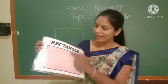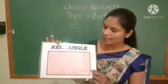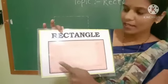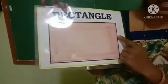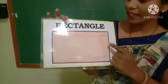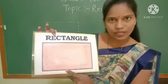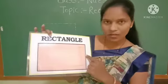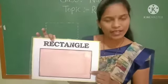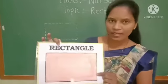Which shape is it? Rectangle shape. In a rectangle, these two sides are long and these two sides are short. Rectangle में ये दो side long होती हैं and these two sides are short. This is the rectangle shape.